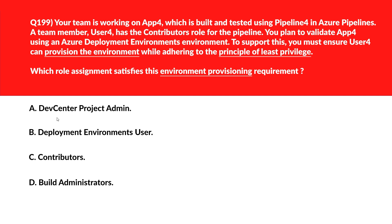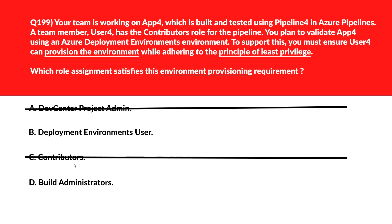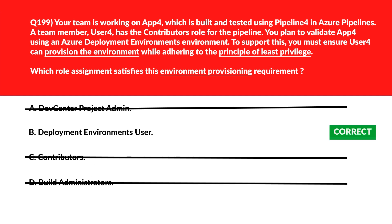A question on the principle of least privilege. Option A, Dev Center Project Admin, grants broad administrative control exceeding the permission scope for environment provisioning — it's out. Option B, Deployment Environments User, enables environment provisioning within Azure Deployment Environments while honoring least privilege — keep this. Option C, Contributors, supports pipeline edits but doesn't permit environment provisioning. Option D, Build Administrators, manages pipeline infrastructure and settings, not environment provisioning. Option B is the right choice.